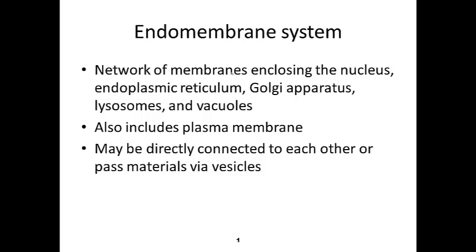The endomembrane system consists of various organelles, including the nucleus, the ER, the Golgi, lysosomes, and vacuoles. I want to emphasize that the endoplasmic reticulum and the Golgi apparatus are the two major and most important parts of the system. Minor players like the lysosome, vacuoles, and the plasma membrane are important in specific pathways, but they don't necessarily apply to all pathways found in the cell.